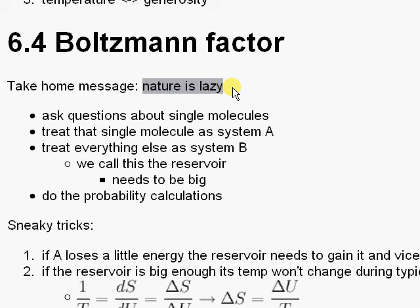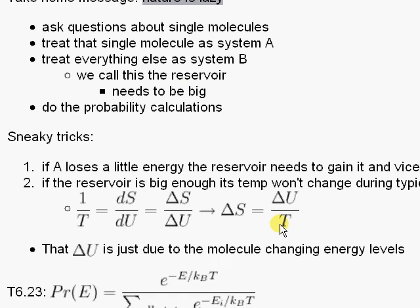But if you reflect on how you study the hydrogen atom, all those energy states are there—there's no reason why electrons would choose one over the other. Well, here we learned why. It's this whole notion of a reservoir. So the four major things that happen: we ask questions about single molecules, we treat that single molecule as system A. We're always doing two systems, remember. We treat everything else as system B, we call that the reservoir, and it needs to be big—you'll see why in a second. And then you just do a whole bunch of probability calculations and use the definition of temperature.